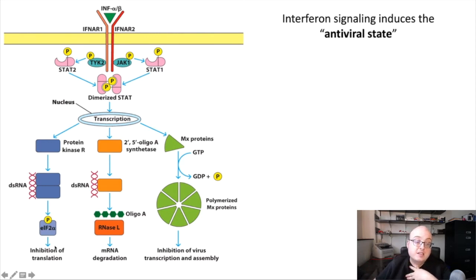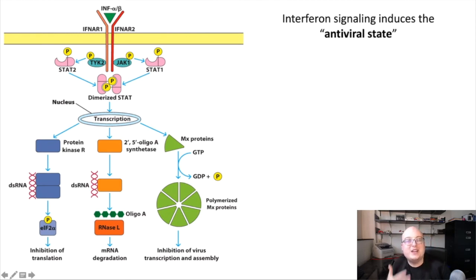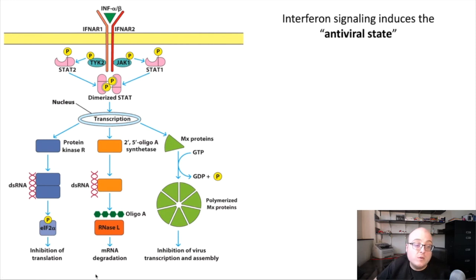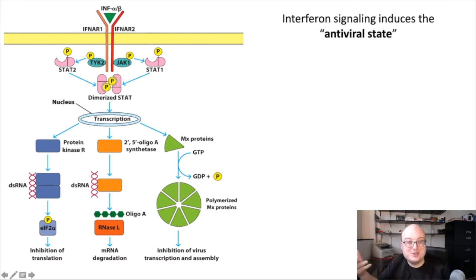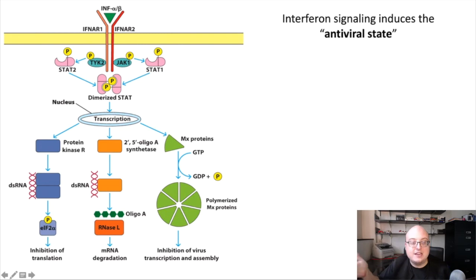The first is the inhibition of cellular translation. Remember that viruses need to use the host machinery in order to replicate their genomes, translate their proteins, and package themselves back into successful particles that can exit the cell and infect new cells. One of the ways we can prevent viral replication is by turning off translation in the cell. This is going to also turn off the translation of our own host proteins, but once a cell is infected with a virus, it's basically a goner anyway — so this is not a bad trade.